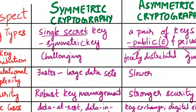In summary, symmetric cryptography relies on a single secret key for encryption and decryption, whereas asymmetric cryptography uses key pairs with distinct public and private keys. The choice between them depends on specific security requirements and use cases — symmetric cryptography is favored for efficiency, while asymmetric cryptography provides strong security and supports key exchange, digital signatures, and secure communication between unfamiliar parties.